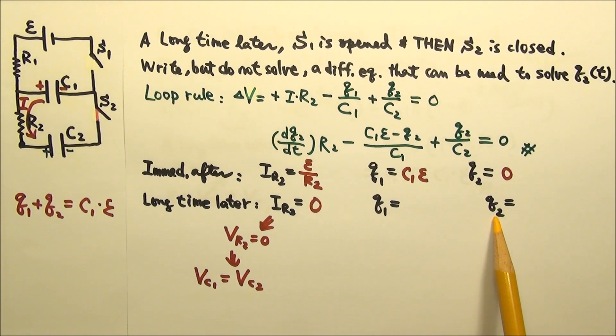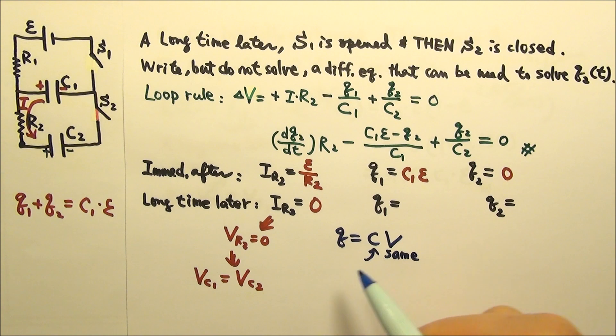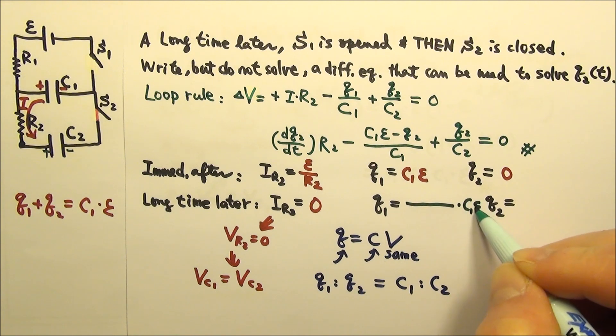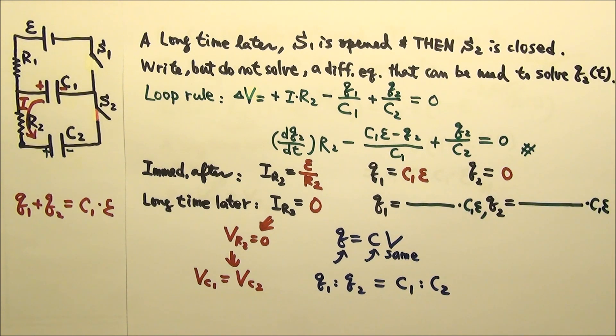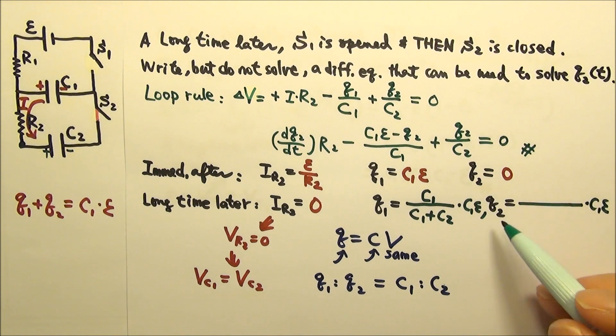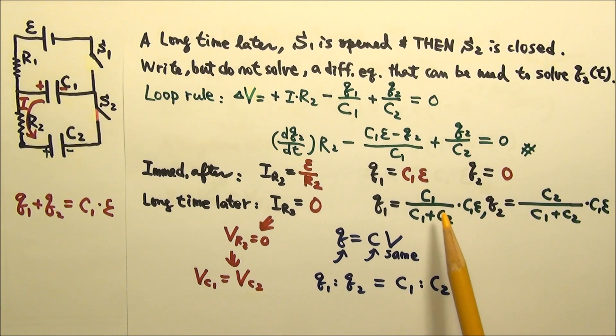Now let's find Q1 and Q2 when the equilibrium is reached. Since Q equals CV, when they reach equilibrium, they have the same voltage. That means the capacitor with the larger capacitance gets more charge. And this means also that Q1 to Q2 equals to C1 to C2. Since the two capacitors share the total charge C1E, each gets a fraction of the C1E. If we chop the total charge into C1 plus C2 pieces, Q1 would get C1 pieces out of the total of C1 plus C2 pieces. While Q2 gets C2 out of the C1 plus C2 pieces. So the sum of Q1 plus Q2 is C1E, and Q1 to Q2 is C1 to C2.